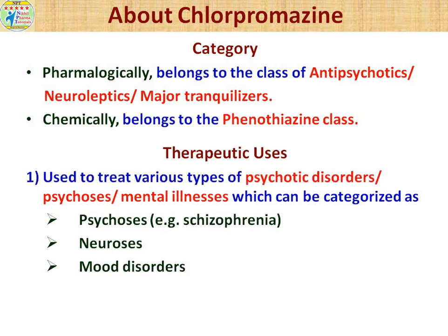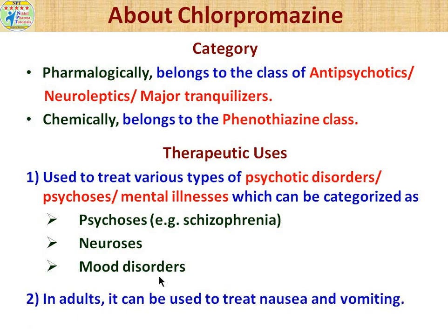Talking about the therapeutic uses of chlorpromazine: it is used in different psychotic disorders and mental illnesses, including different types of psychoses like schizophrenia, neuroses, and mood disorders. Second therapeutic use is that this drug aids in the treatment of nausea and vomiting.